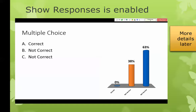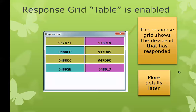Students can look at their clicker pad screen and see that they selected, let's say, C — but they only get that feedback immediately after they push the button. So they get a little nervous and start trying to press the button again. You can tell the system to accept the first response only, or to allow them to change their answer, but they do get a little bit nervous about that.